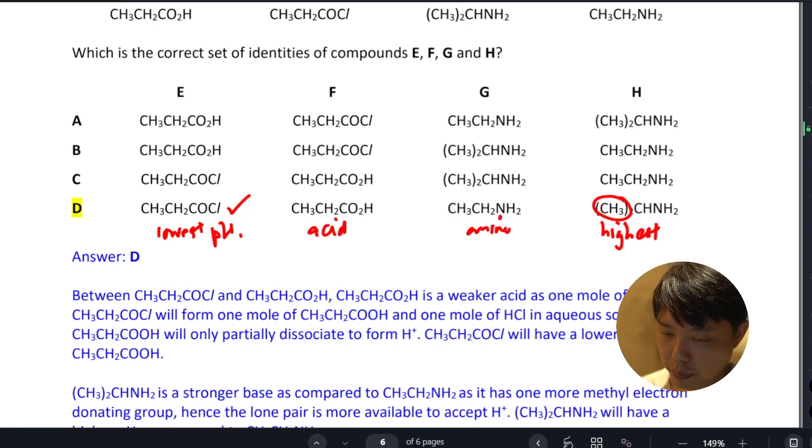So the pH should go from lowest to highest in this order. Our answer is D.